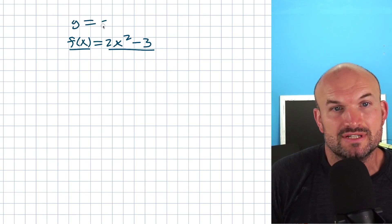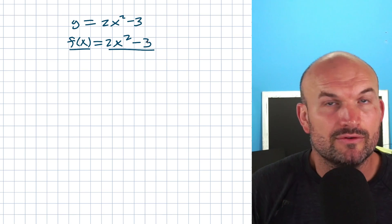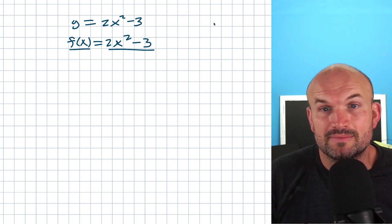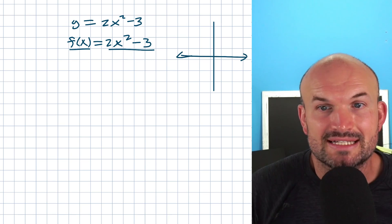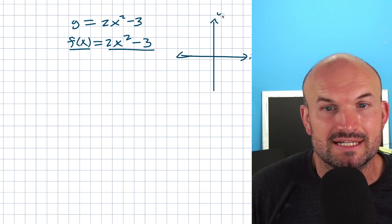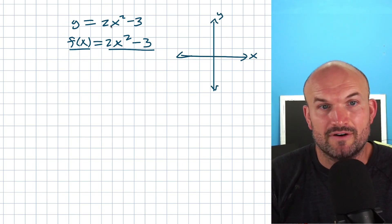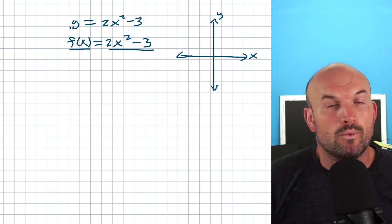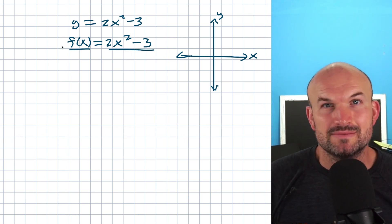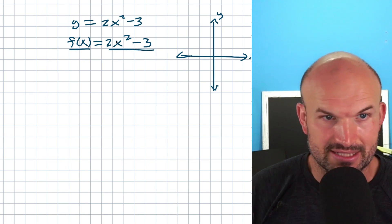We could say y equals 2x squared minus 3. The reason we do that is we wanted to graph something on the Cartesian coordinate plane, so we'd have the x-axis and the y-axis. You can simply think about a function in terms of x's and y's and just replace the y with the f of x, because they both represent the same thing in this expression.